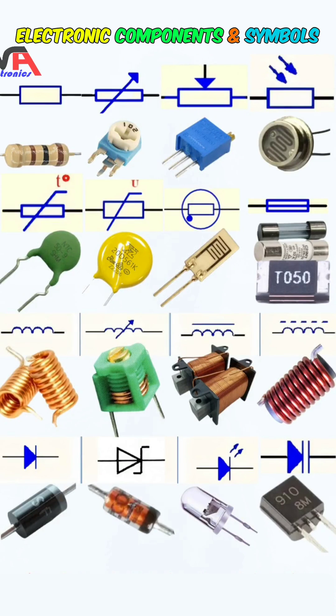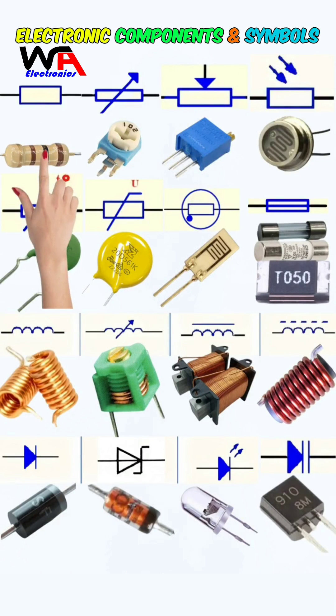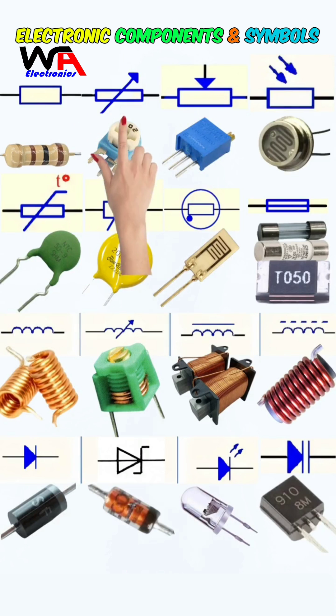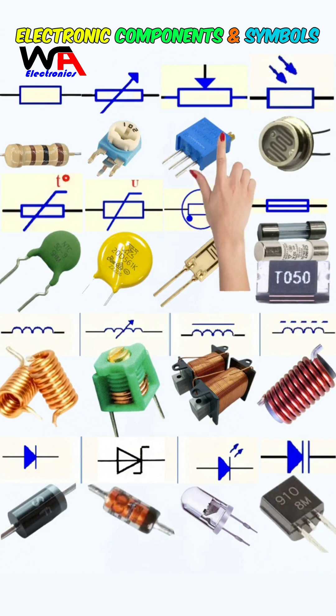Let's examine the electronic components and their corresponding symbols. This is a color-coded resistor, and next to it is a trimmer resistor. Here we have a photoresistor.